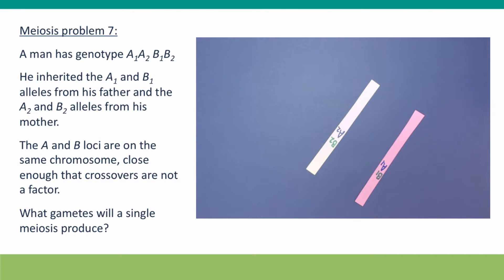So, our man is still heterozygous for A1, A2 and B1, B2. This might well be the same man we talked about in the last problem, but we have one more piece of information.